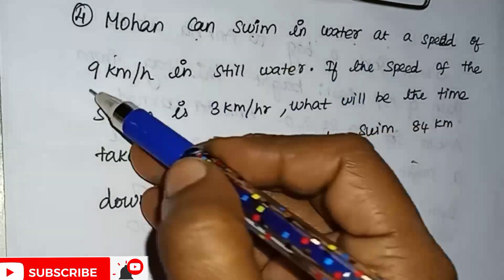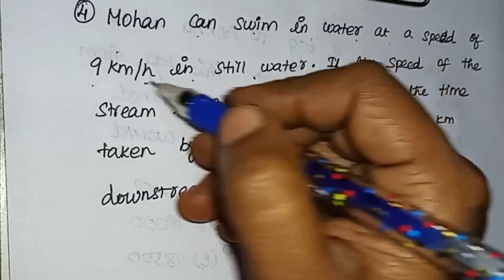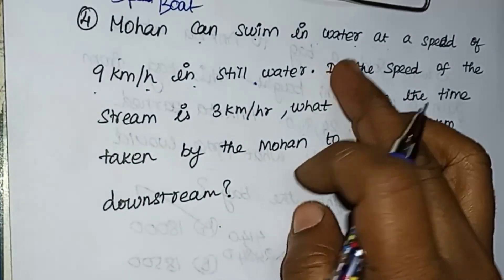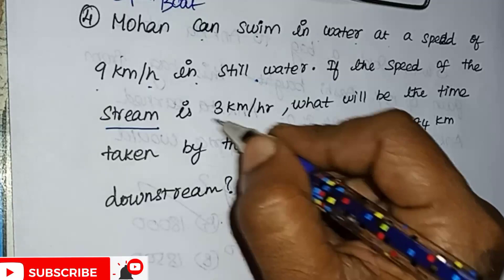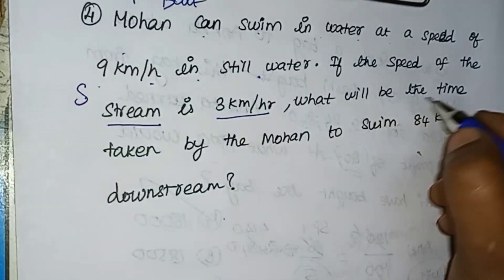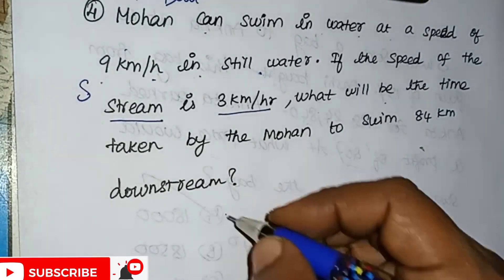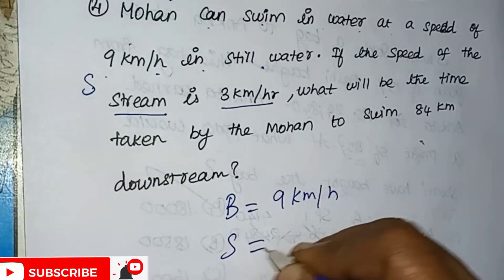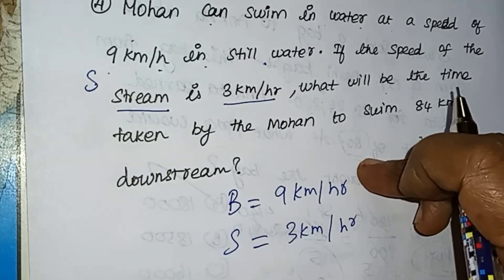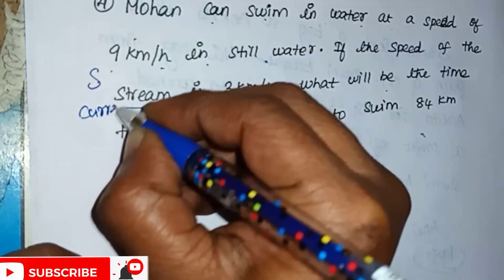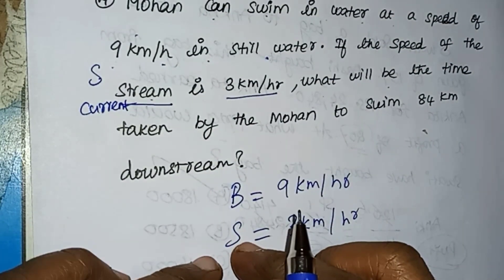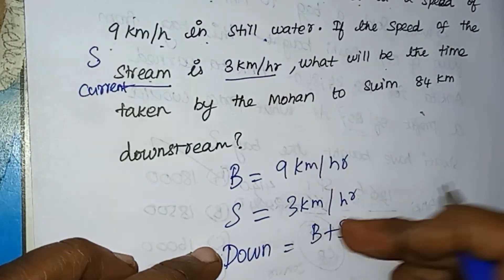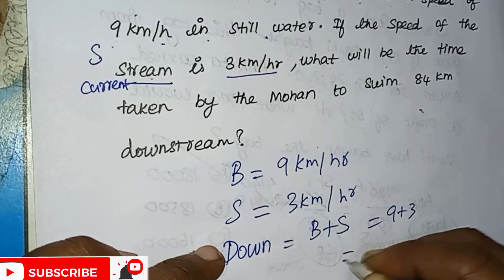Mohan can swim in still water at a speed of 9 km per hour. The speed of the stream is 3 km per hour. We need to find the time taken by Mohan to swim 84 km downstream. Since we know both the boat speed and stream speed, downstream speed equals B plus S, which is 9 plus 3 equals 12 km per hour.